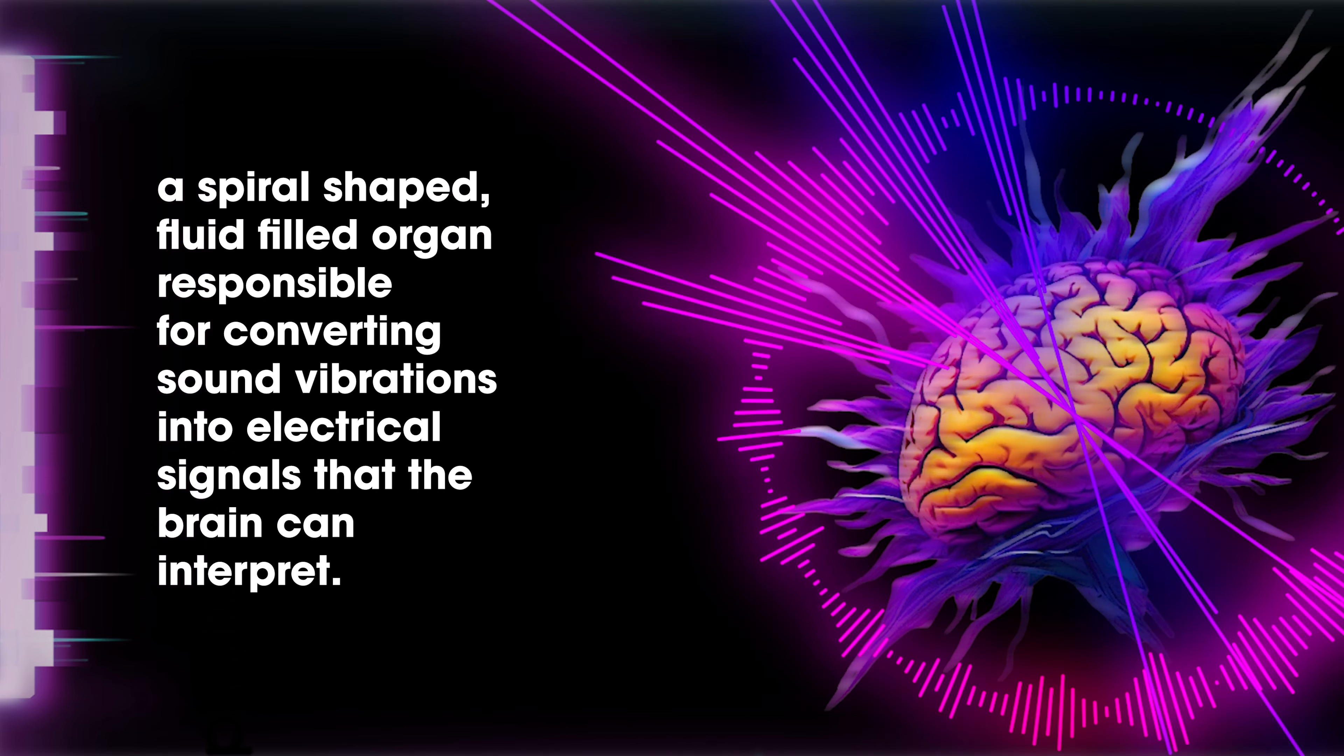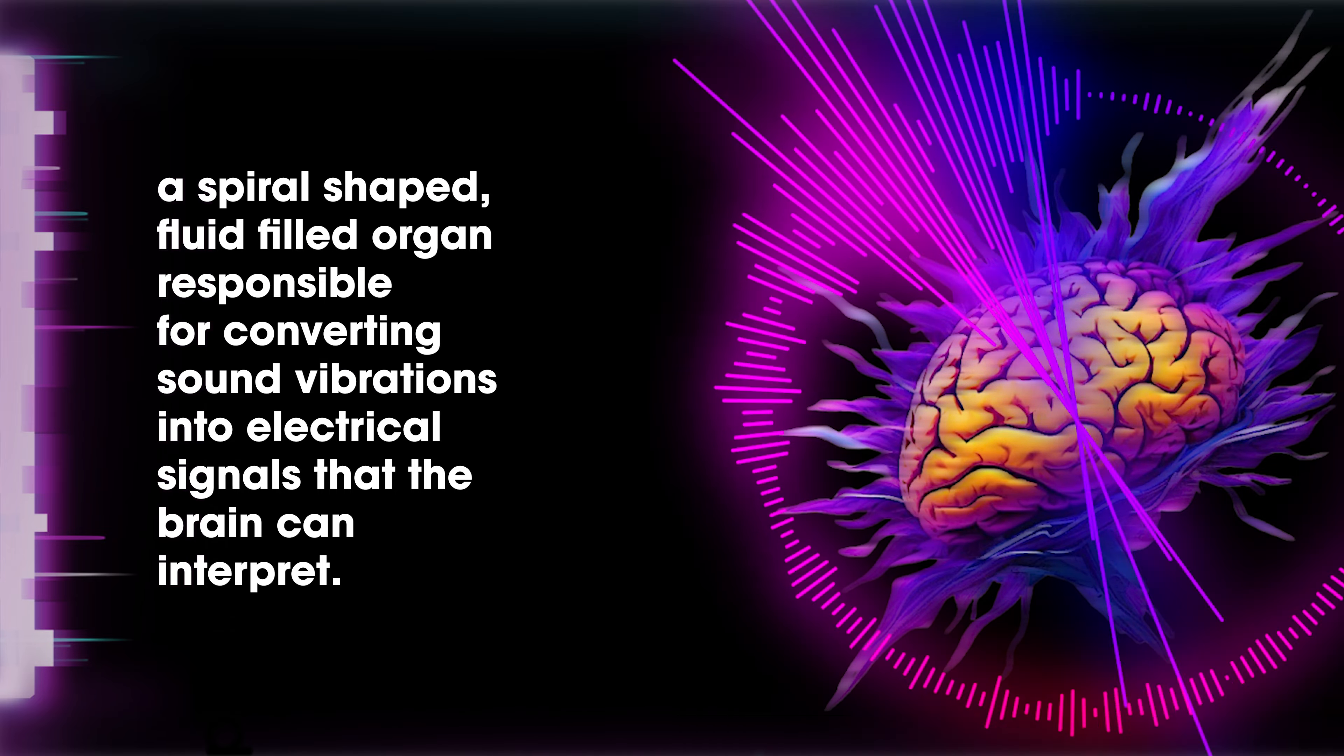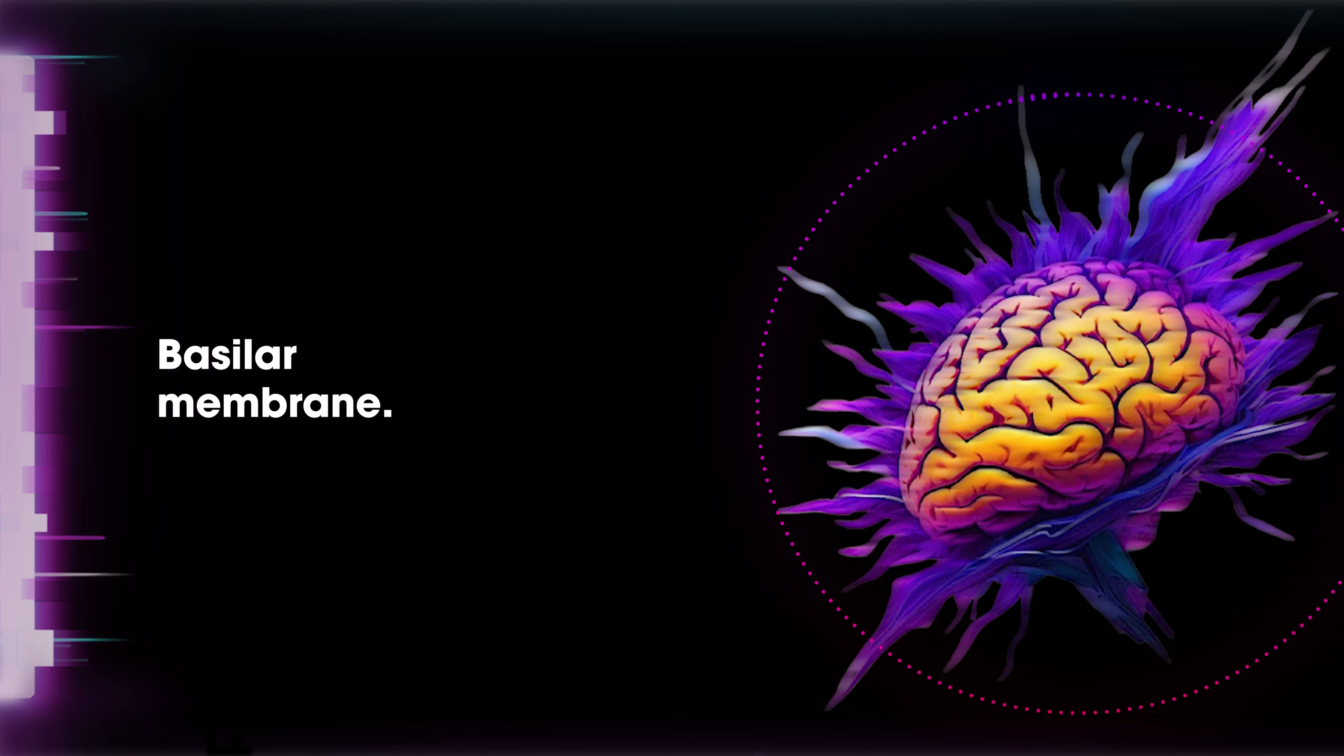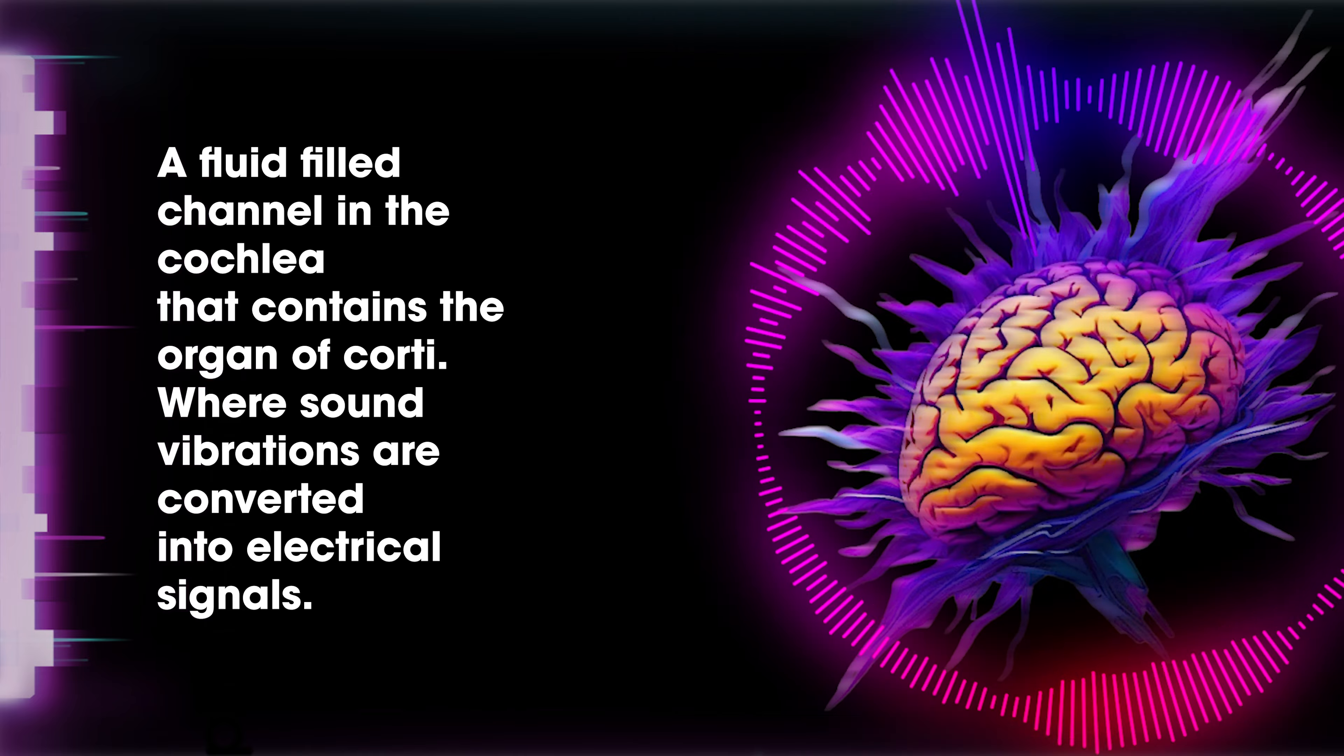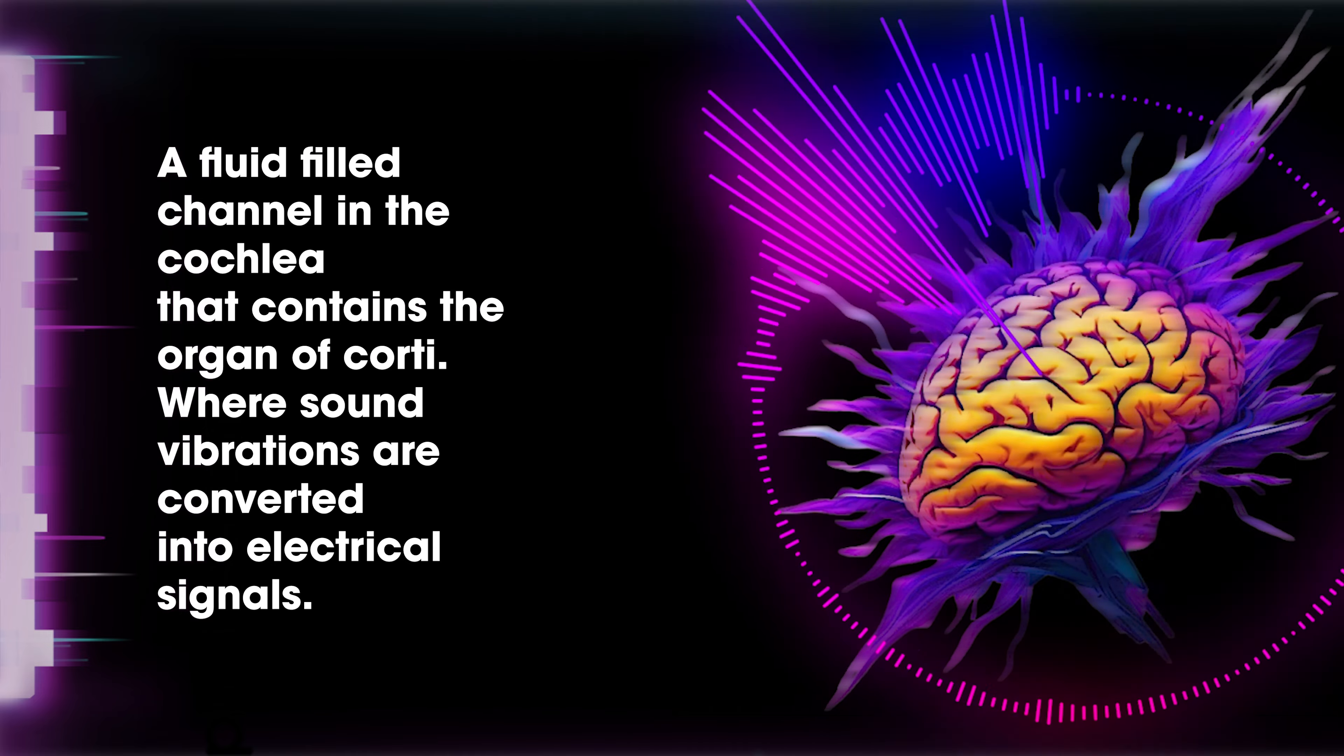Basilar membrane: a fluid-filled channel in the cochlea that contains the organ of Corti, where sound vibrations are converted into electrical signals. Organ of Corti: a structure located on the basilar membrane that contains hair cells which produce electrical signals in response to sound vibrations.